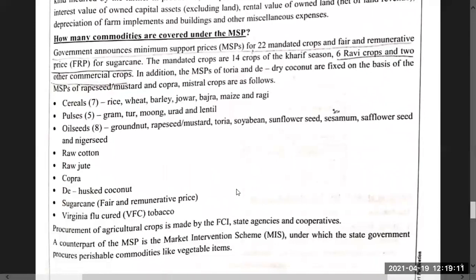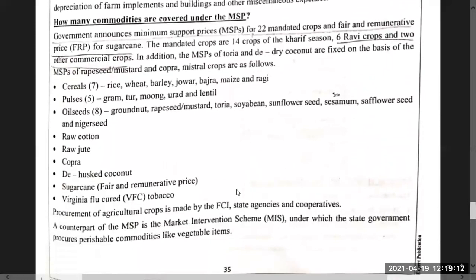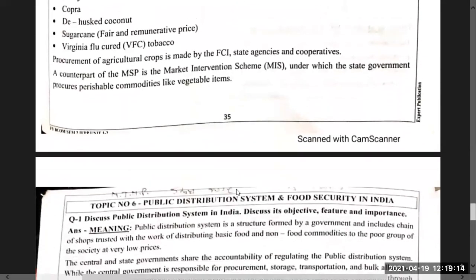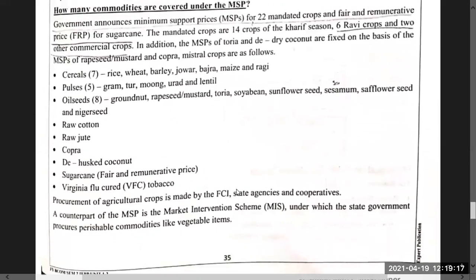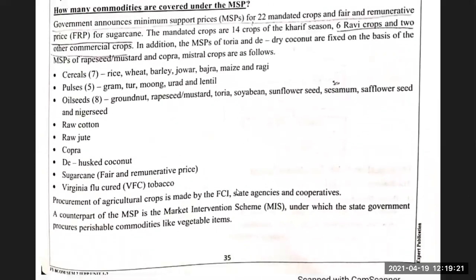Now comes the commodities covered under MSP — this is just a small topic, so don't worry too much. The government announces MSP for 22 mandated crops, and a Fair and Remunerative Price (FRP) for sugarcane.